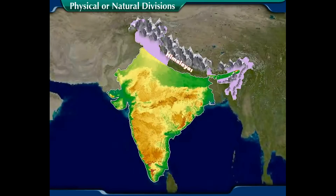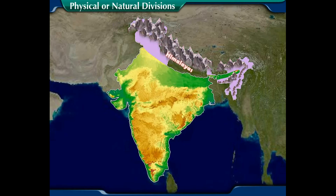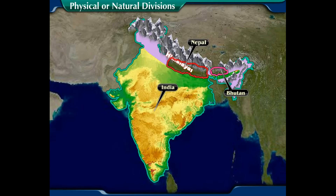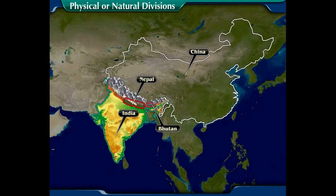Did you know that the Himalayan ranges are spread over five countries: Bhutan, India, Nepal, China, and Pakistan?